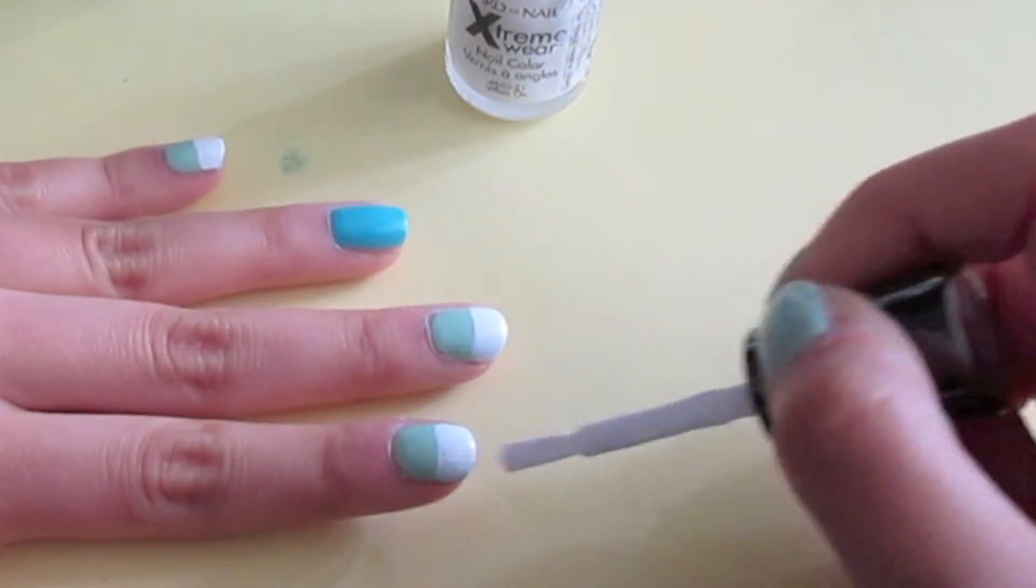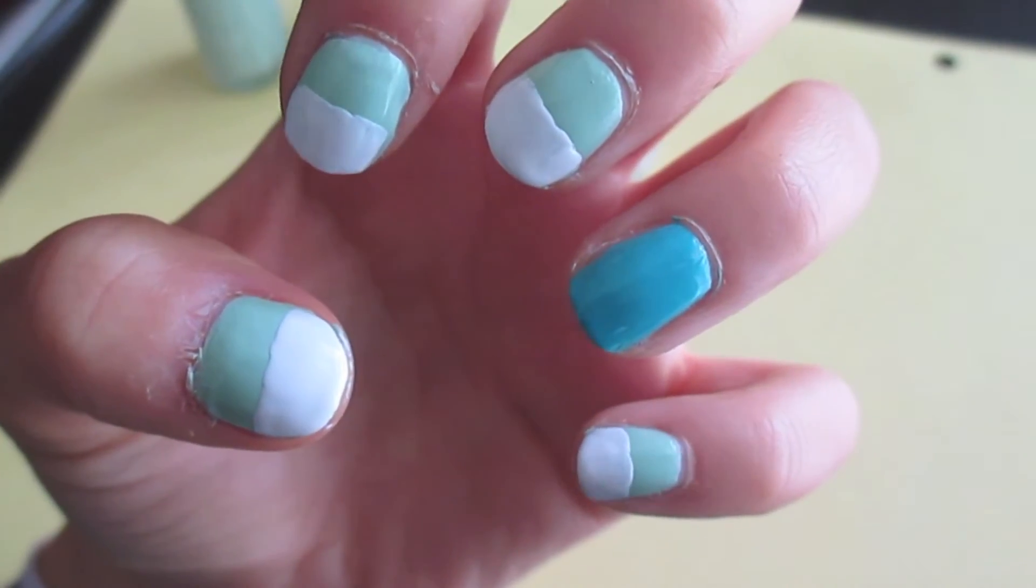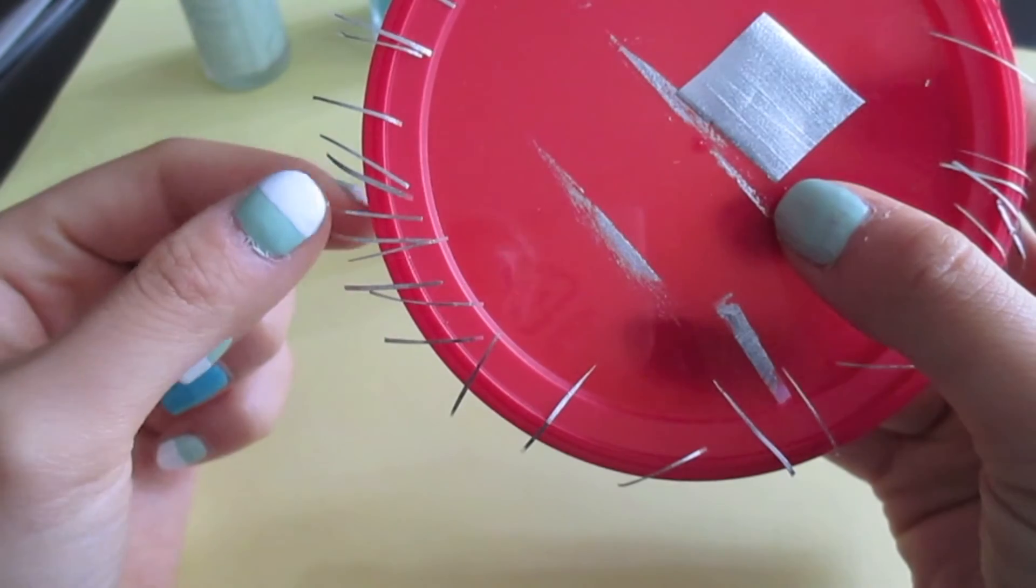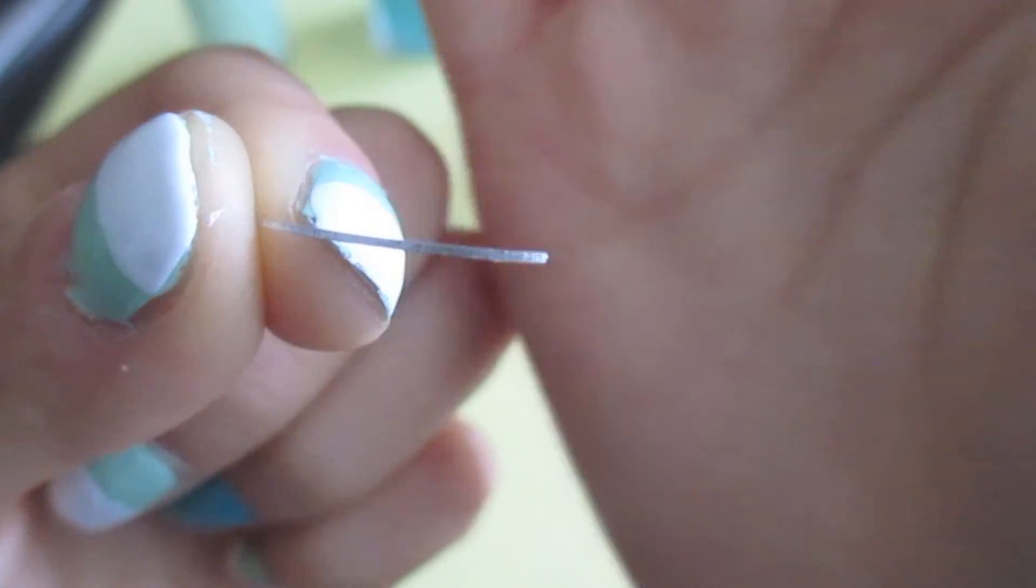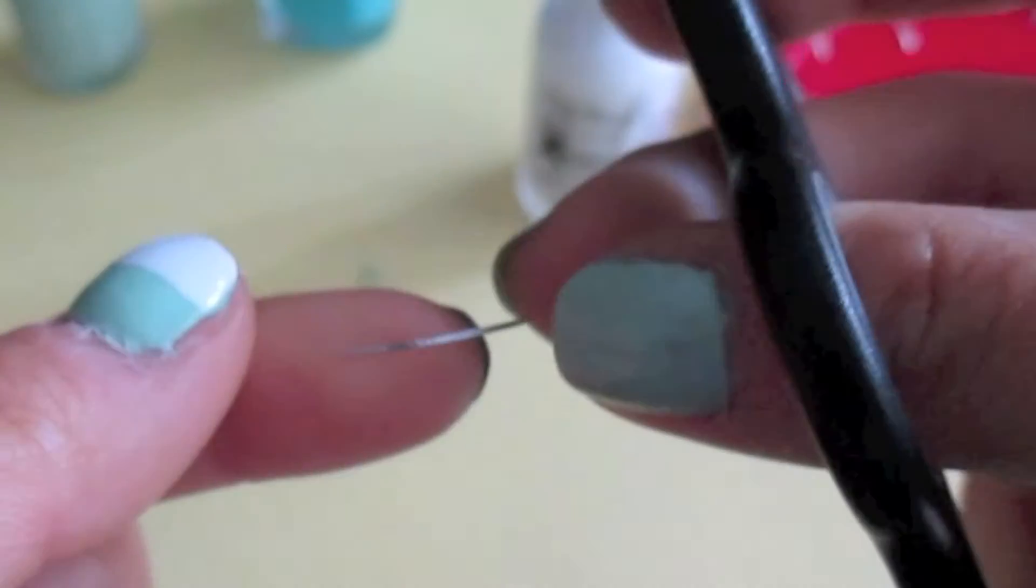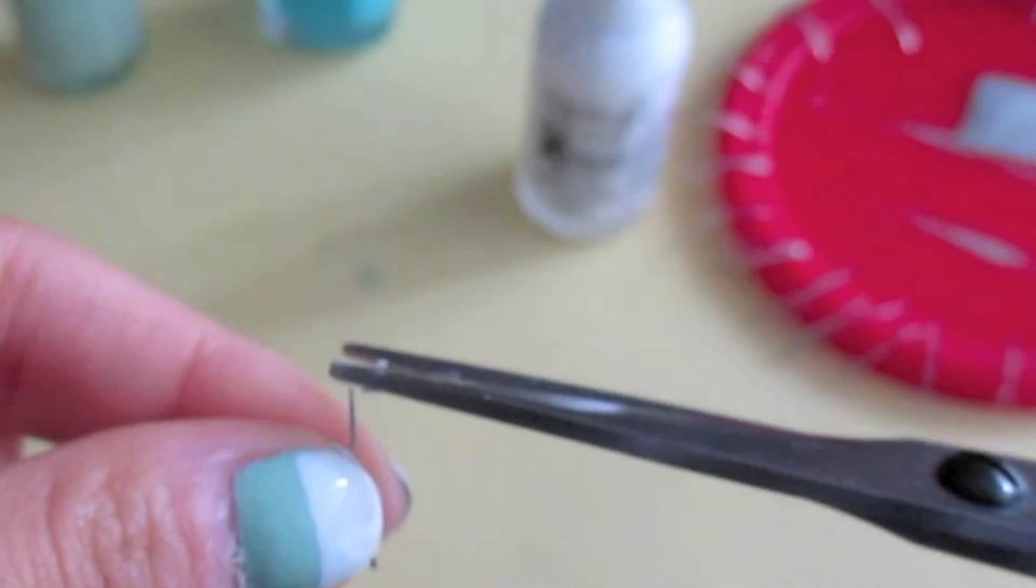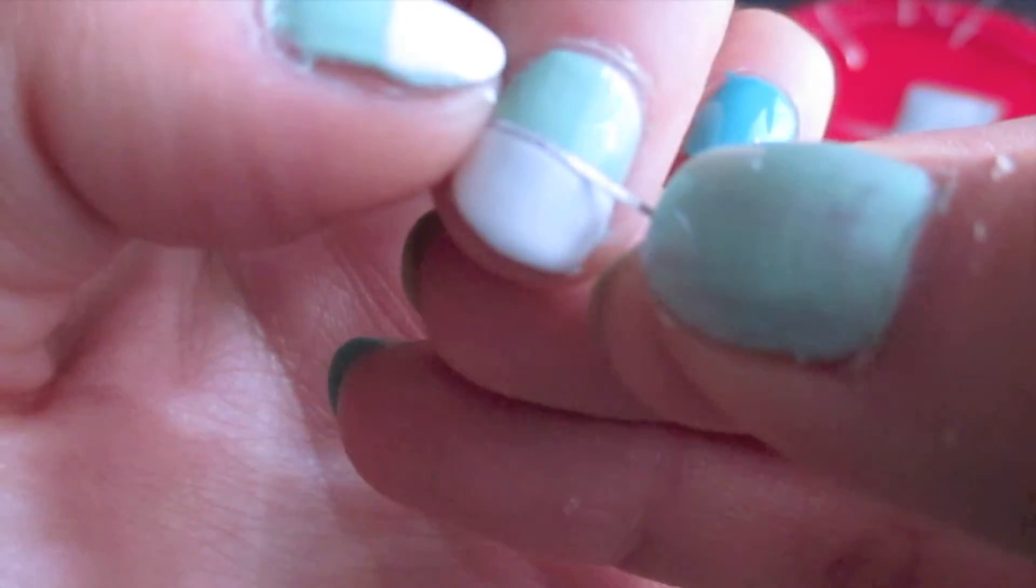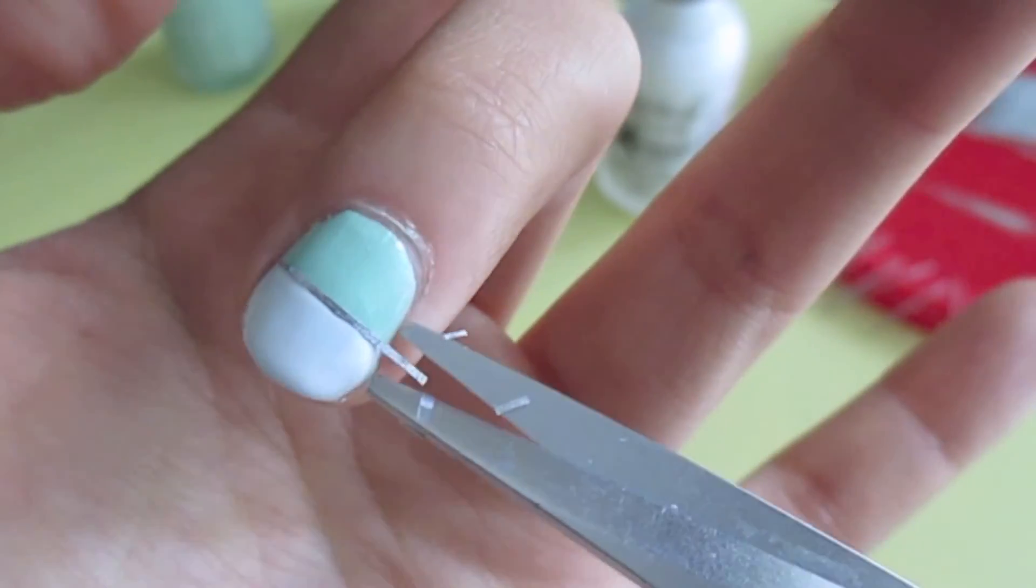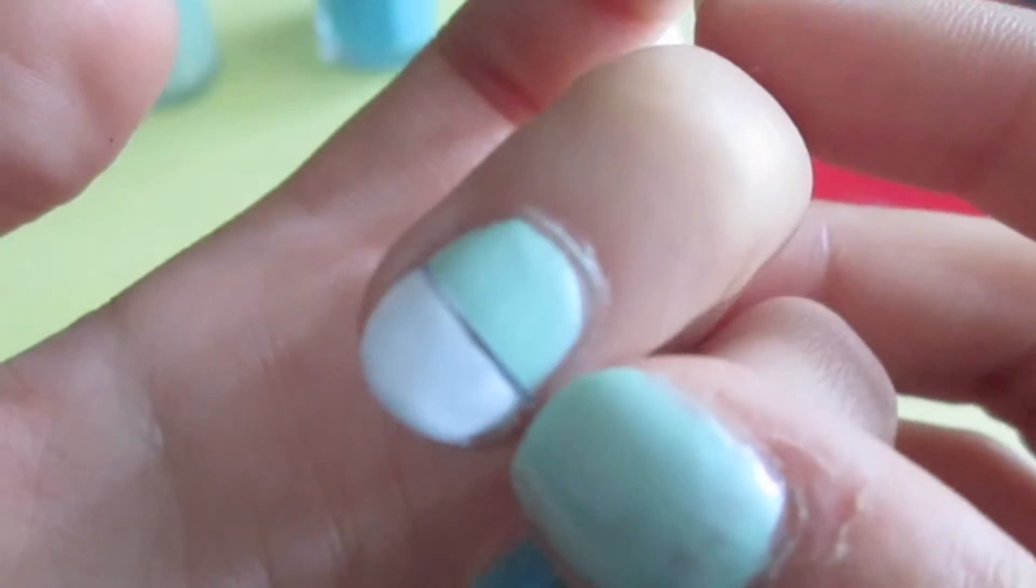It's okay if they're not perfect because the tape will cover the unevenness. Once they're dry, kind of tacky, take a metallic strip and cut both ends until it's the right size for your nail width. Then apply it on the line between the white and the mint color. Then snip off any excess tape.